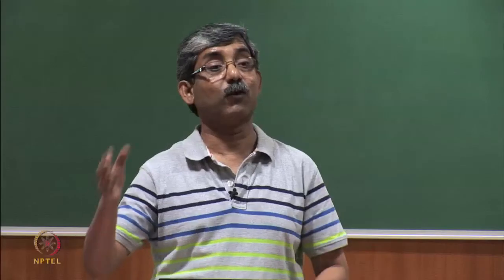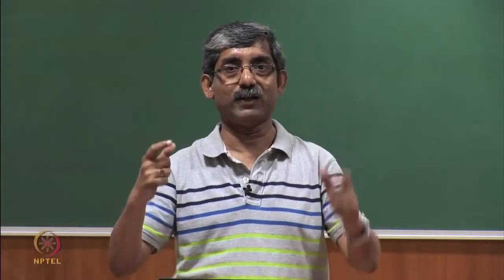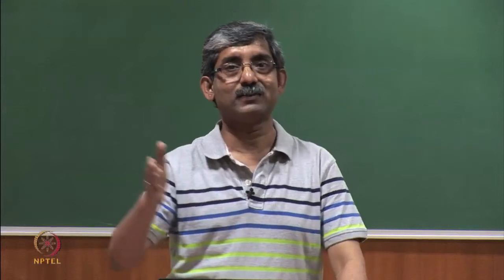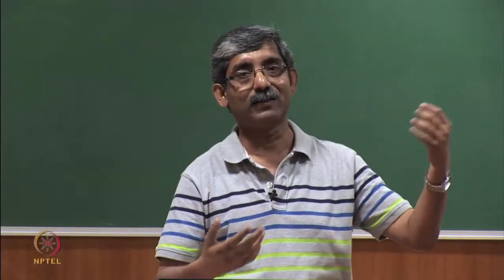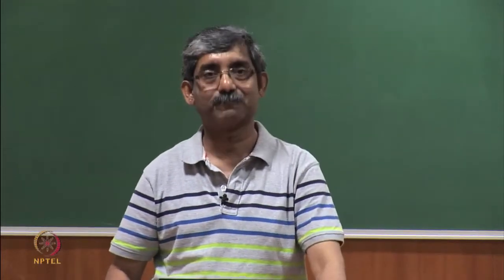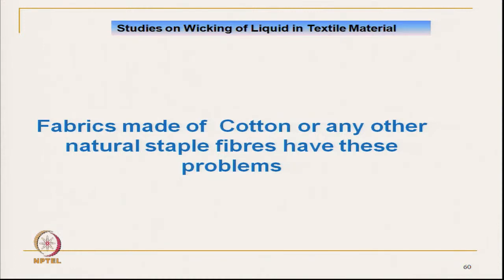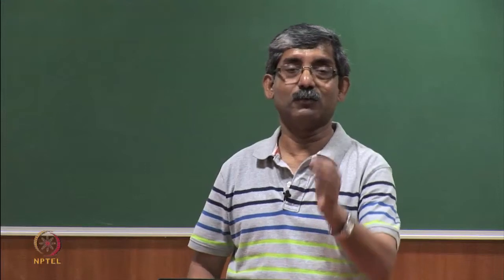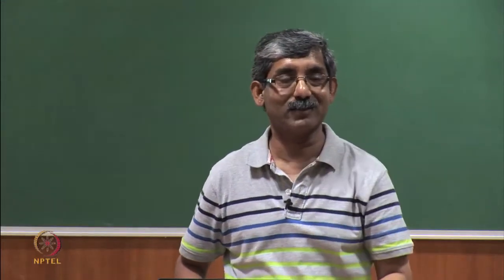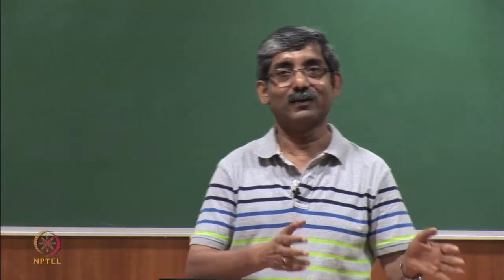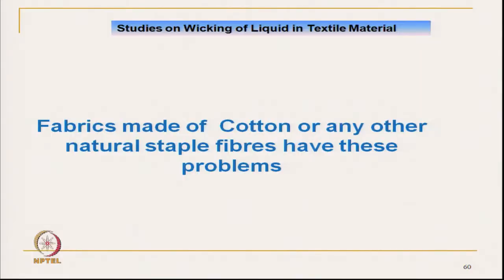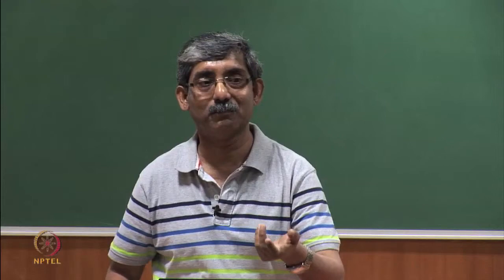If we compare the same polyester in filament form versus staple form, staple polyester will have much lower wicking than filament. That is why fabric made of cotton or any other natural fibre has this problem — wicking rate will be less. Cotton has two problems: it is hydrophilic in nature and retains moisture, and wicking is also less due to the shape of the pores.